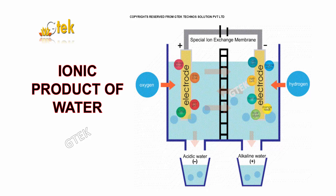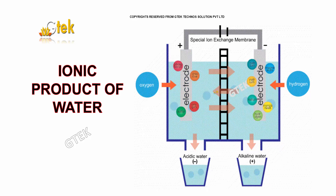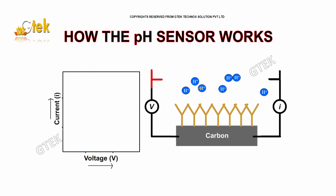Ionic Product of Water. How the pH sensor works? This is a graph between the current I and voltage V in amps and volts respectively. pH is nothing but the negative log of H+ ion, and this pH senses the concentration of H+ ions.